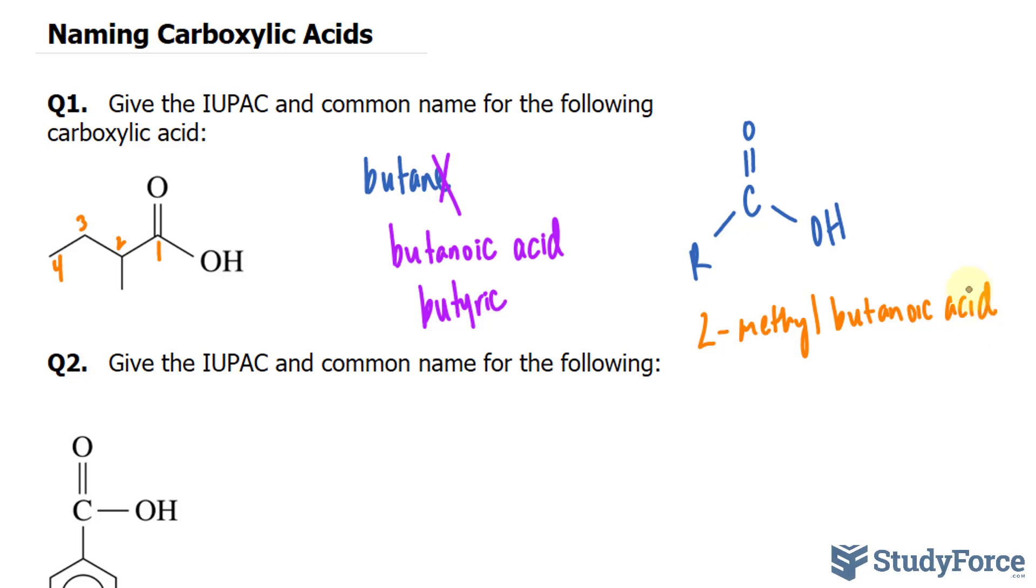That's the IUPAC name. But for the common name, the Greek letter alpha specifies the carbon atom next to the carboxylic carbon. So this would be alpha, that's beta, and this one would be gamma. Since the methyl exists at the second carbon, we would say alpha-methyl butyric acid.